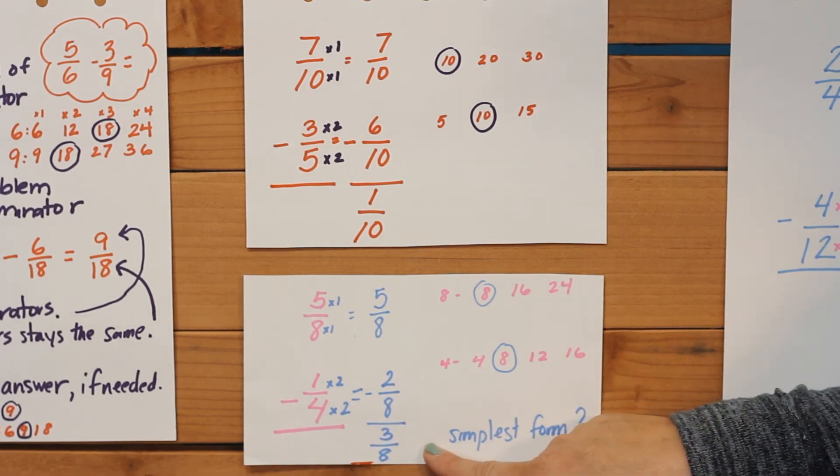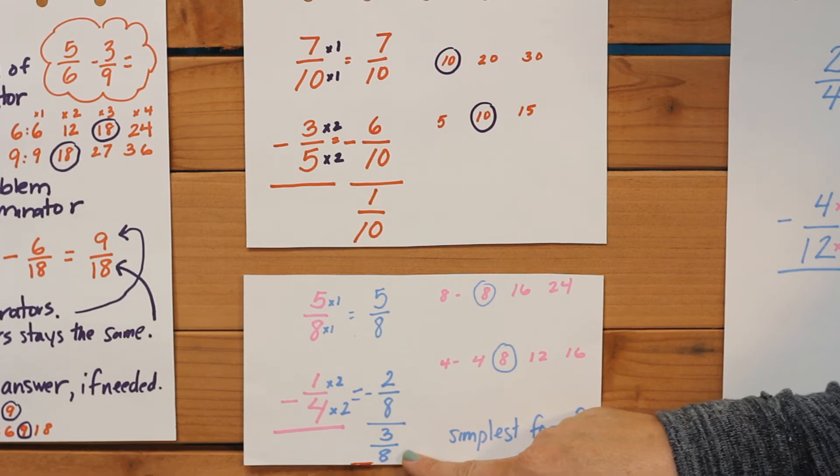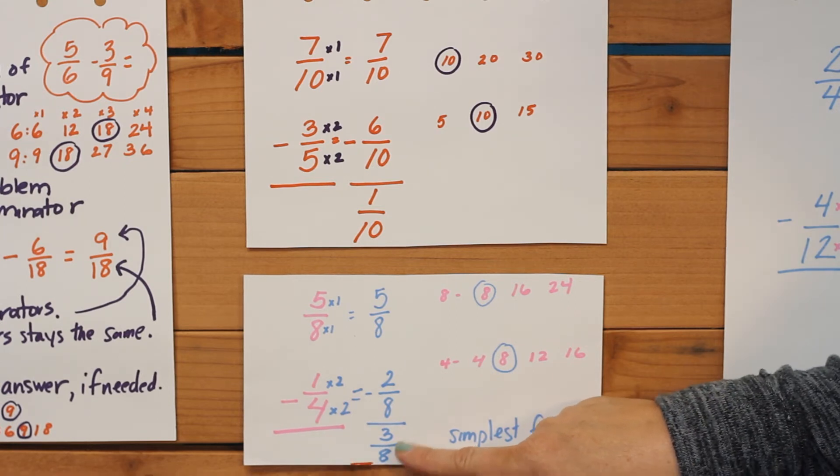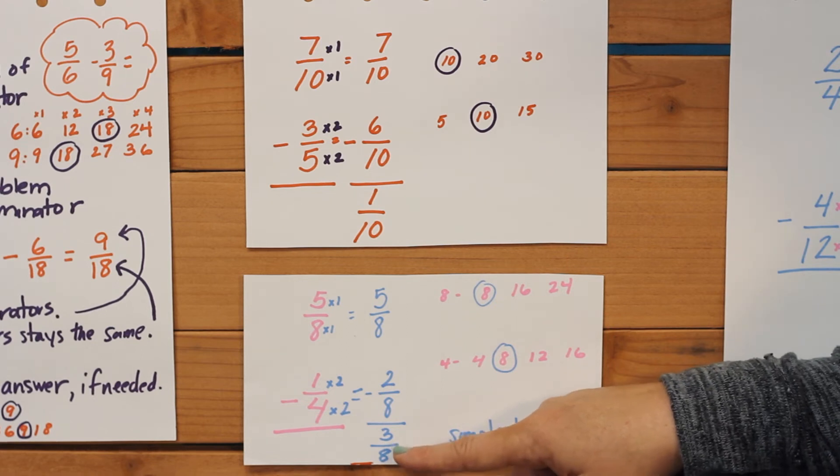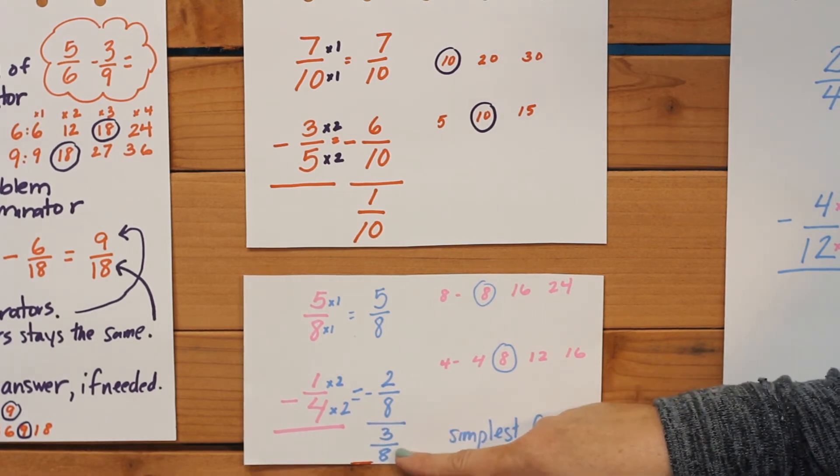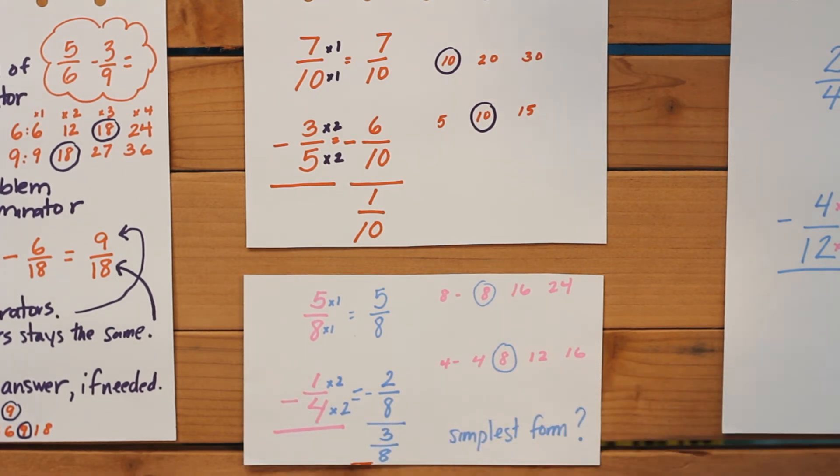Remember, don't just leave your answer there. You need to make sure, is that in simplest form? Well, and it is in this case because three and eight, there's no numbers that can be divided into both of them. So now we're going to go to our final sample.